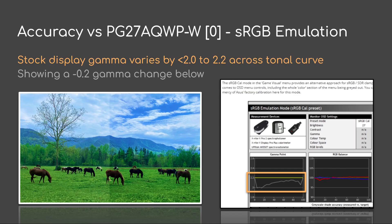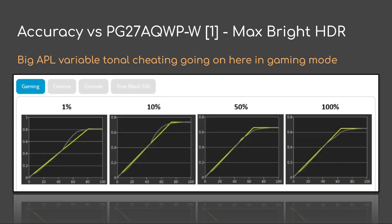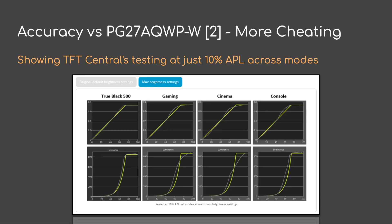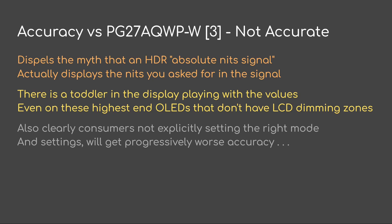Note that the HDR modes have very similar problems, just like the SDR modes. For example, if we look at max bright HDR, you get a very big difference between average picture levels, and you see a lot of tonal changing going on in gaming mode. Looking at the TFT Central results testing at just 10% APL across modes, the modes also have a lot of variation. This dispels the myth that an HDR absolute nits signal actually displays the nits you asked for. There is still a toddler in the display playing with the values, even on these highest-end OLEDs. Consumers not explicitly setting the right mode are going to get progressively worse accuracy, and even in-signal overrides still have problems.